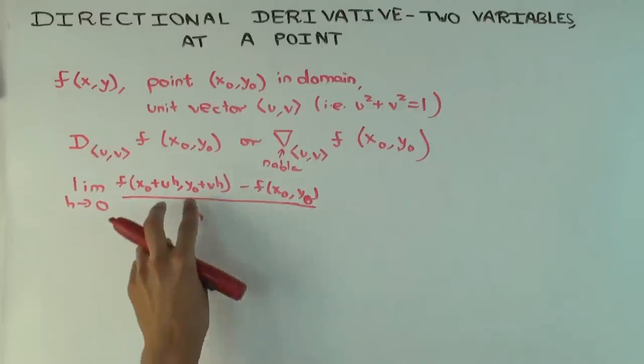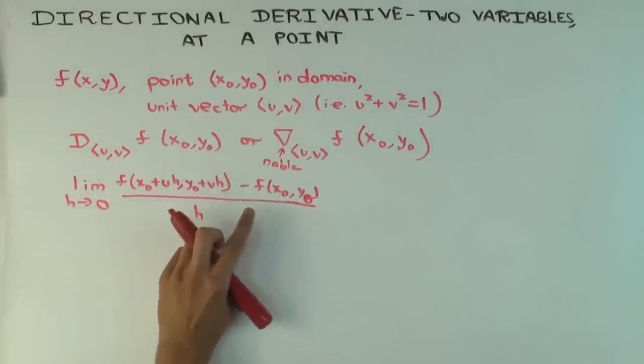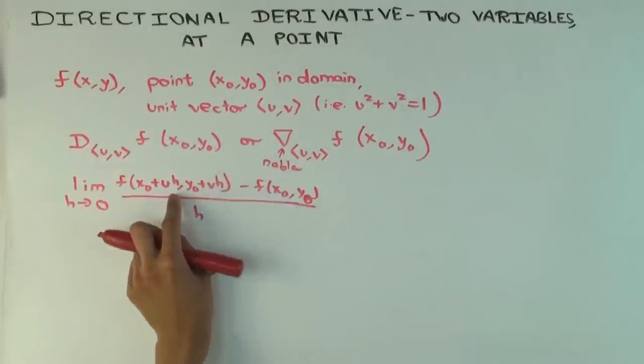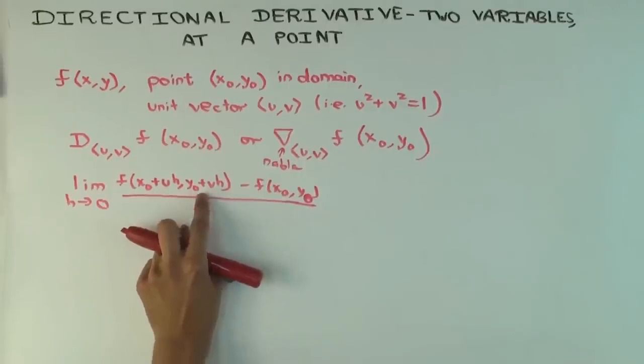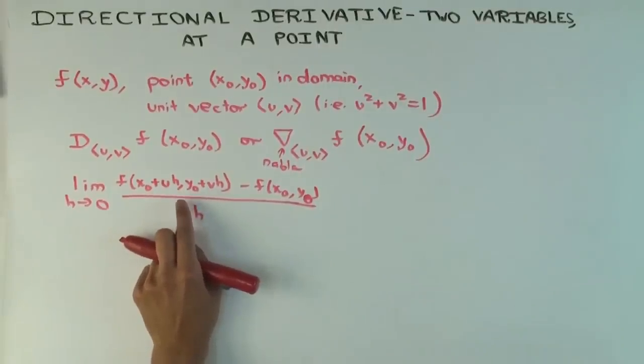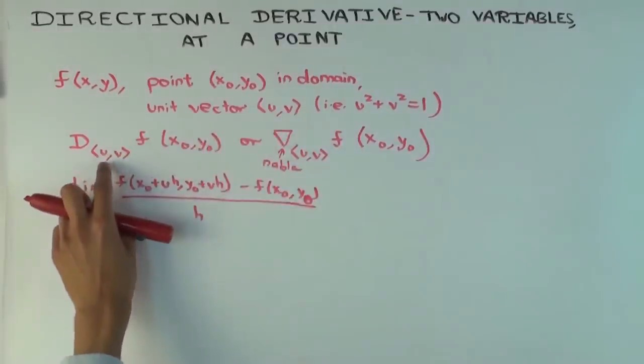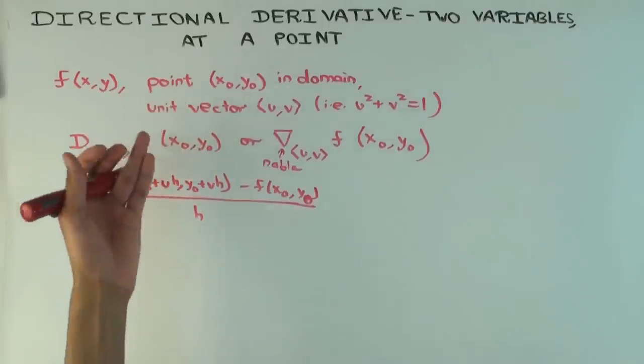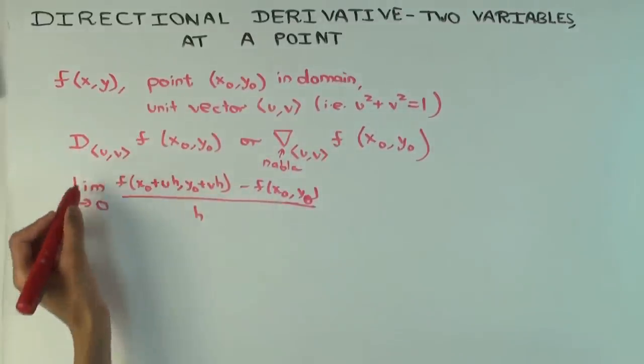So it's the function value if you move slightly by a magnitude of h in the direction of uv. And the unit vector is really just to capture that when you add this much you're basically moving a distance of h. In some sense you can define this notion even when the input is not a unit vector. It's just not something people would usually call a directional derivative. Directional usually means you're using unit vectors. That's the definition.